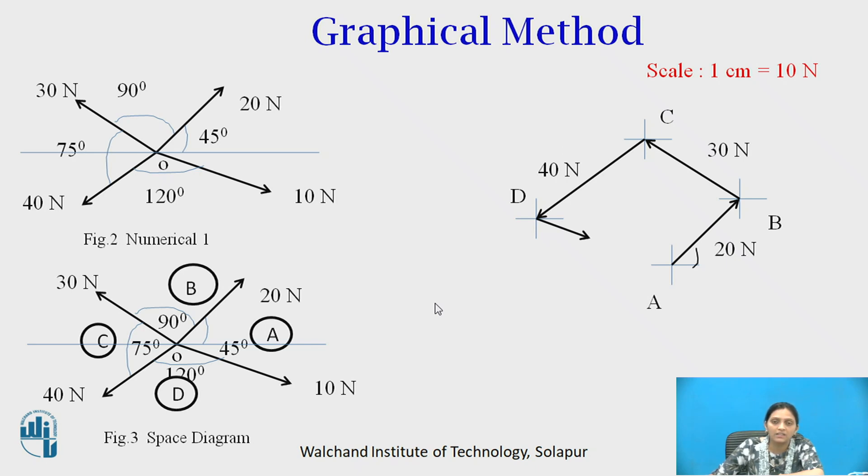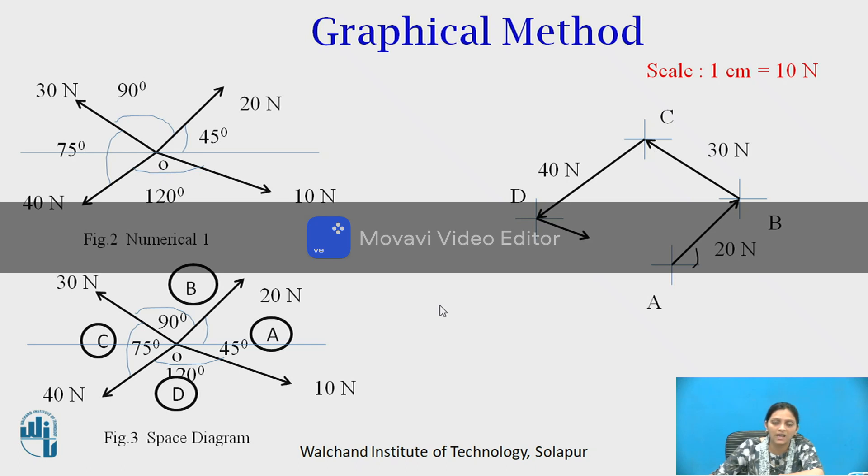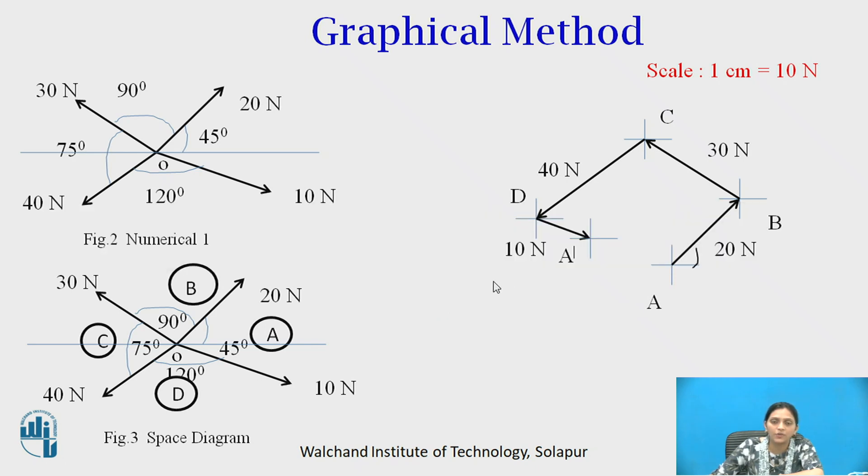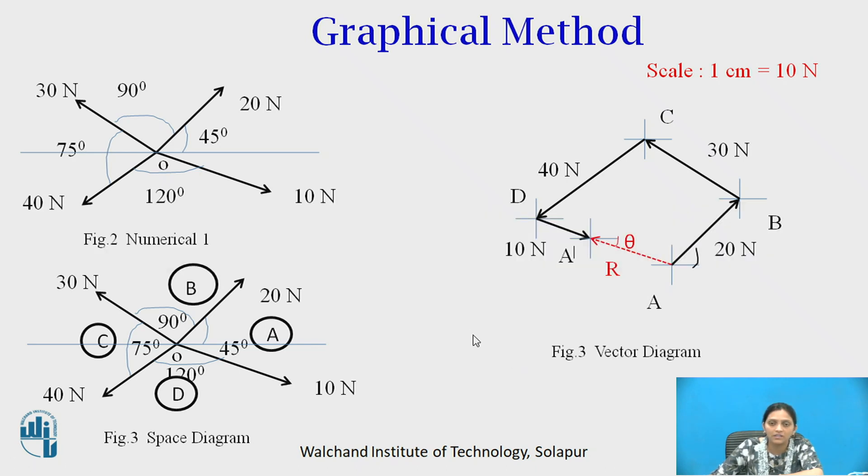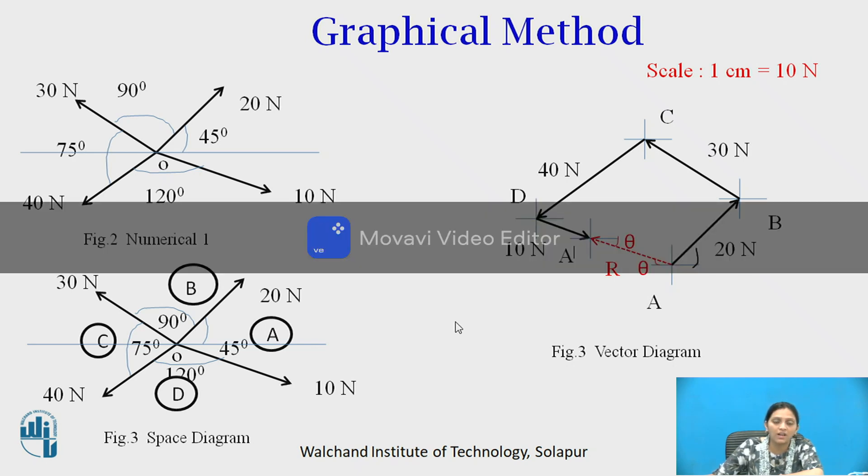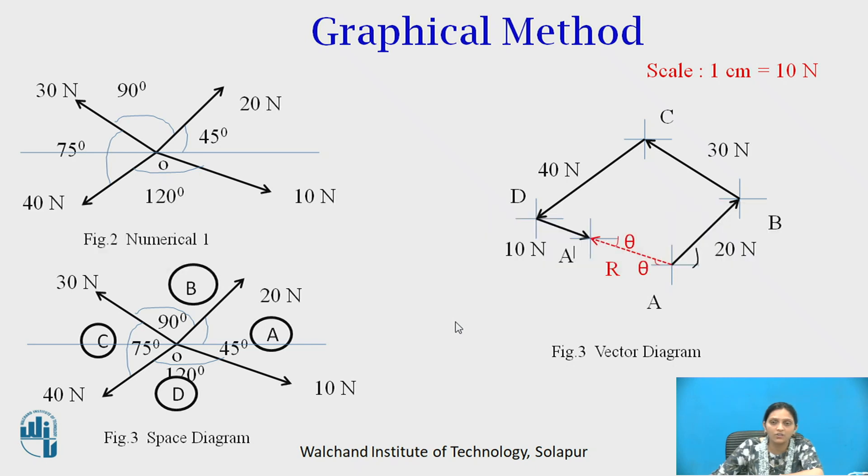It means that the starting point and end point of this figure is not the same. This means it has a resultant. So take this point as A dash and join A and A dash. This is the resultant and the direction of resultant is from start to end. All forces are running in one direction, but resultant is in opposite direction. So A to A dash is the direction of resultant and theta is the angle. You measure this A A dash in centimeters, convert using the scale and find out the answer of R in Newtons. For theta you measure angle directly by using protractor and find out the answer of theta.